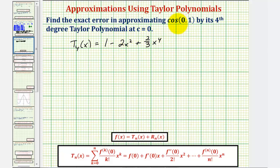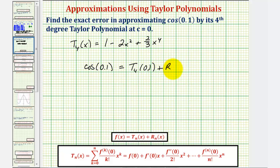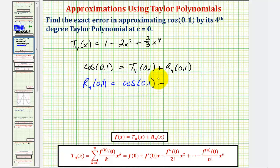This polynomial gives us an approximation for cos(0.1). The exact value of cos(0.1) equals T₄(0.1) plus the remainder (error) R₄(0.1). To find the exact error, we solve for R₄(0.1): it equals cos(0.1) minus T₄(0.1). Let's compute this difference using a graphing calculator.